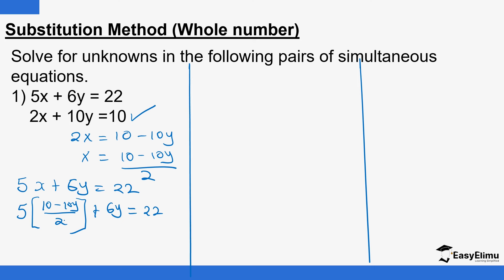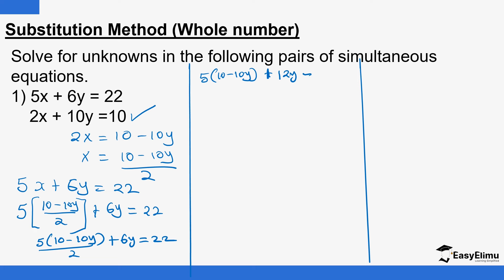Now x is not there, so we only have one equation in one unknown. We open up that bracket: 5 into (10 minus 10y), everything divided by 2, plus 6y equals 22. I'll multiply all through by 2. The 2 cancels the denominator on the first term, giving us 5 into (10 minus 10y), plus the second term becomes 12y, and 22 multiplied by 2 gives 44.